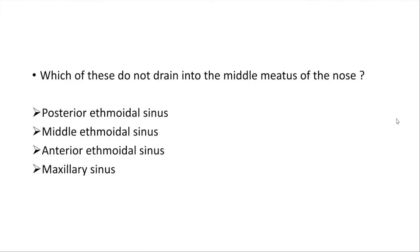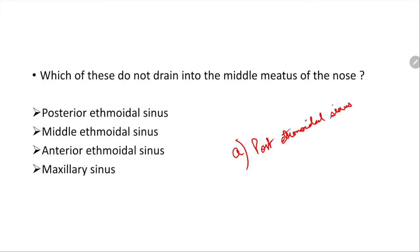The question I want to discuss today is: which of these does not drain into the middle meatus of the nose? The options are: posterior ethmoidal sinus, middle ethmoidal sinus, anterior ethmoidal sinus, and maxillary sinus. You may think that since three of them are ethmoidal sinuses and the maxillary sinus stands out, you might want to tick that. But actually the correct option is A, which is posterior ethmoidal sinus.